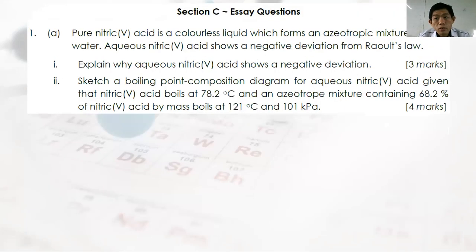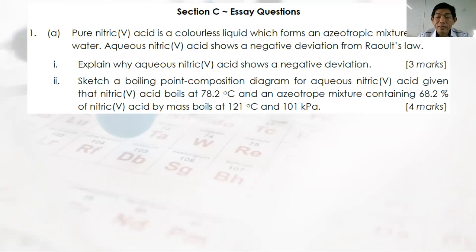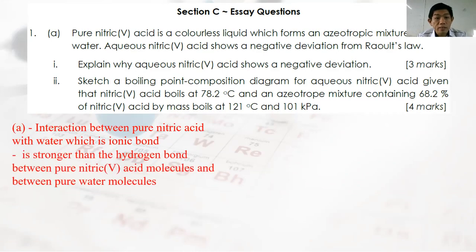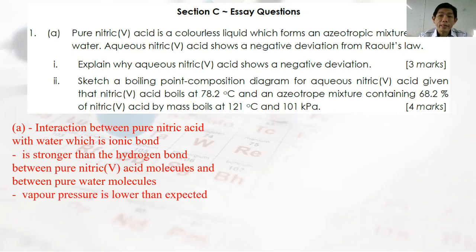Essay Question 1: Pure nitric acid forms an azeotropic mixture with water, and aqueous nitric acid shows negative deviation from Raoult's Law. Question 1a: Explain why. Water and nitric acid dissociate to give nitrate and hydronium ions, forming ionic interactions. These are stronger than the hydrogen bonds between pure nitric acid or pure water individually. Therefore, the vapor pressure is lower than expected, giving negative deviation.